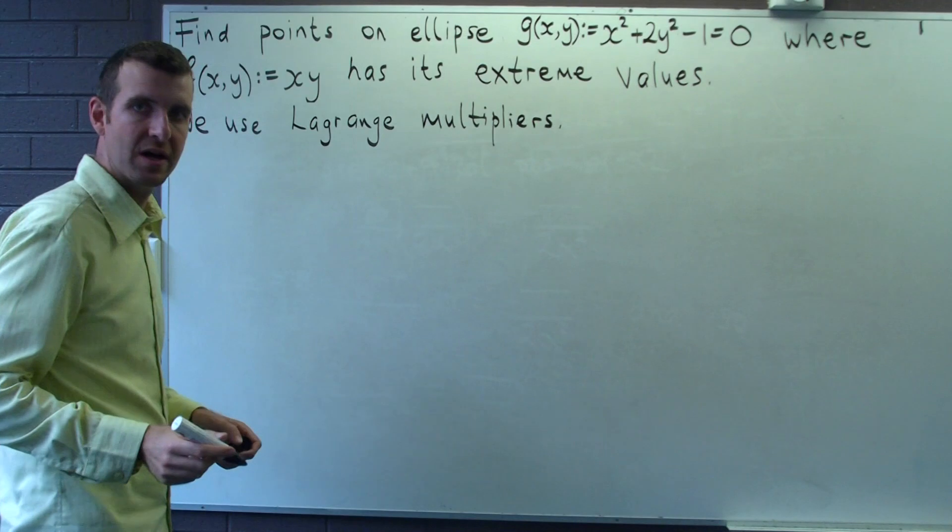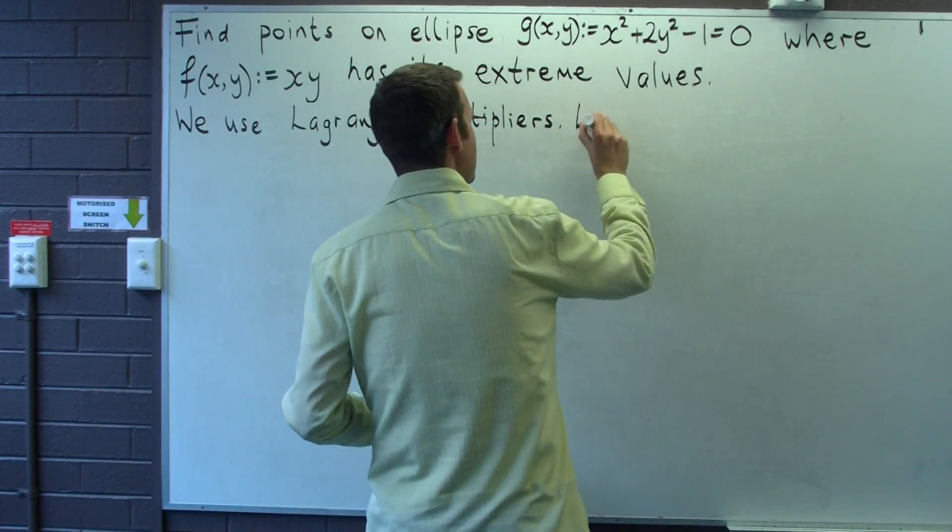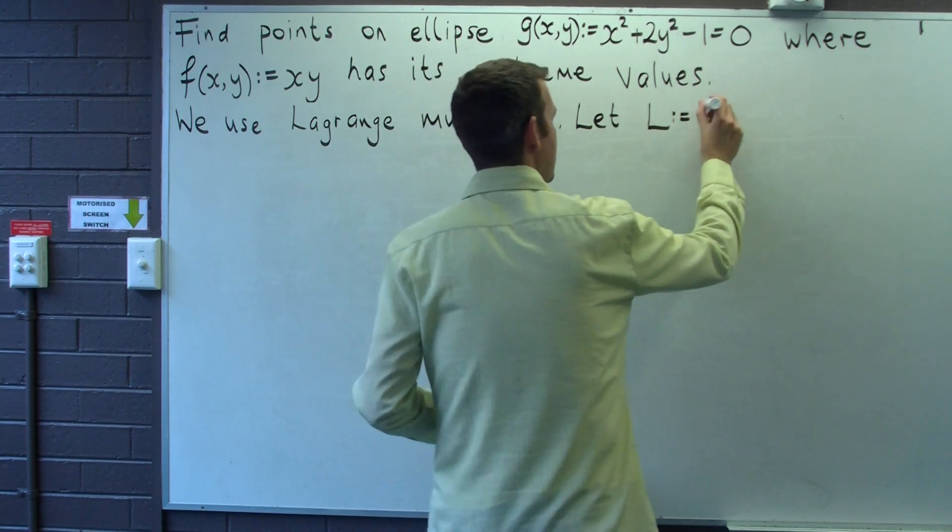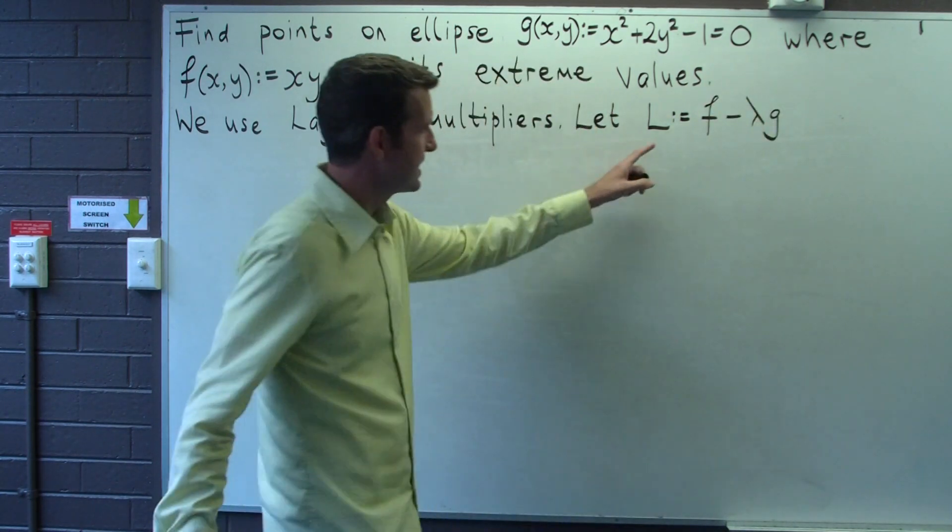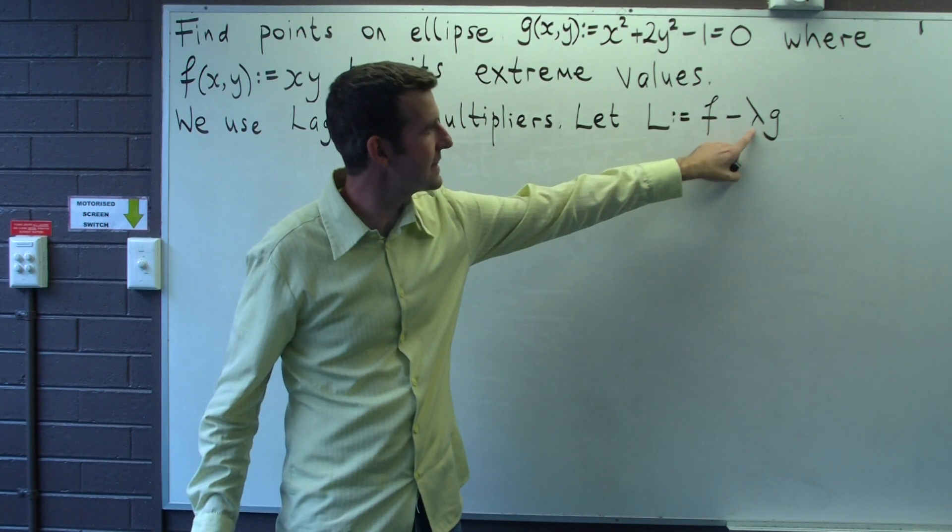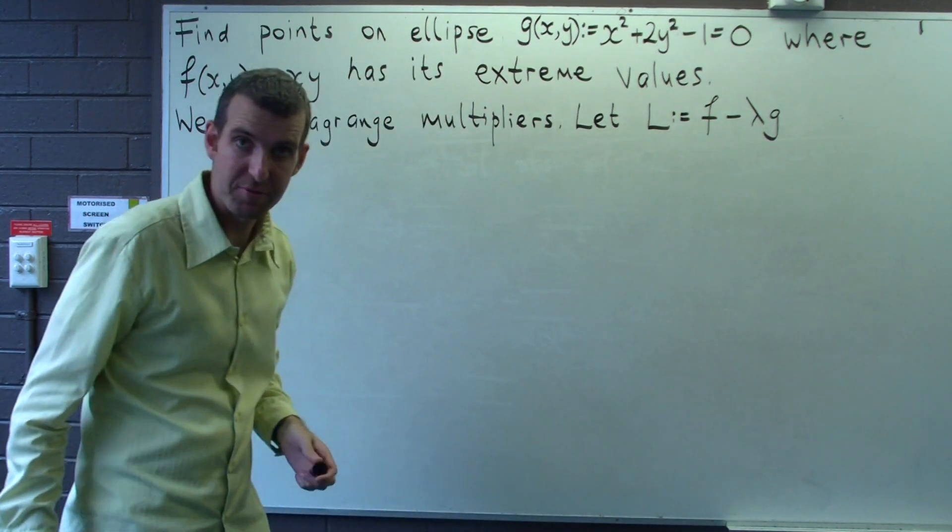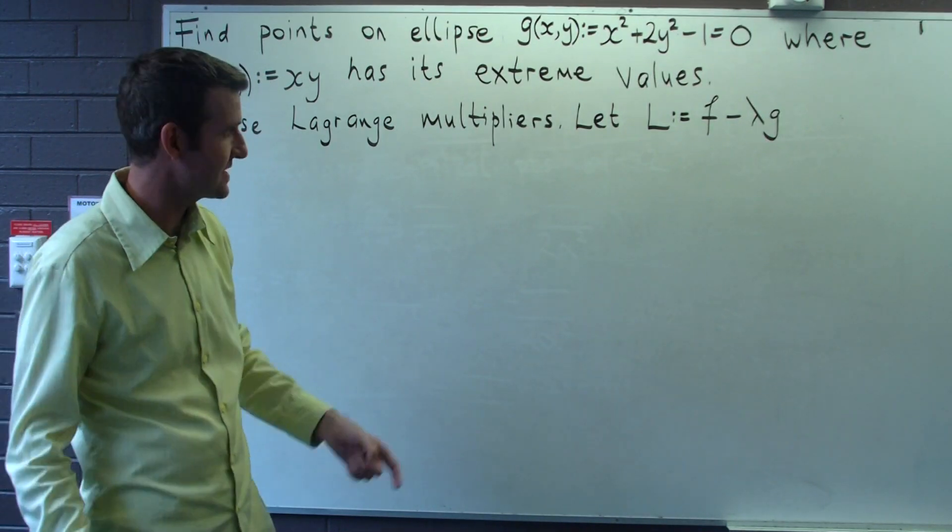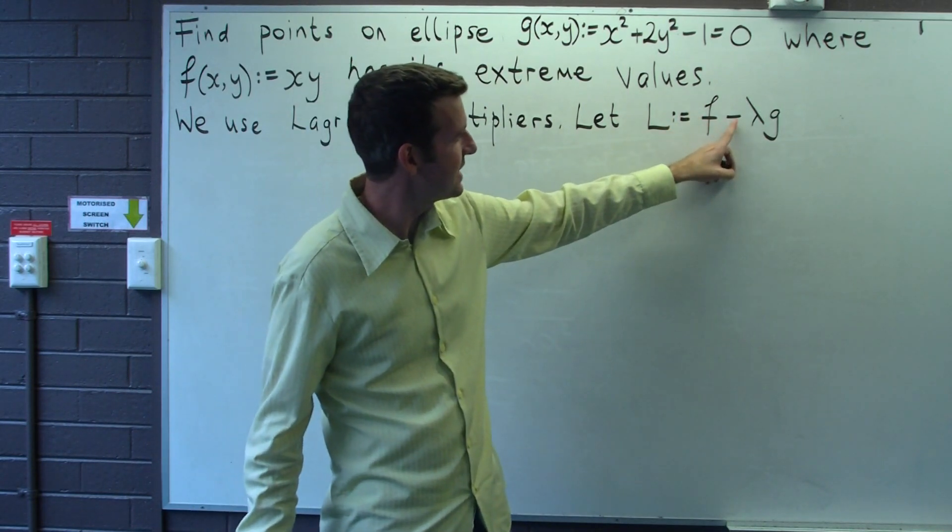Okay, so we introduce our Lagrangian function L. L is just defined as f minus lambda g, where lambda is the Lagrange multiplier. And the theory of Lagrange multipliers tells us that grad f minus lambda grad g is just zero.